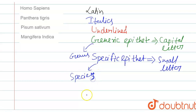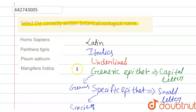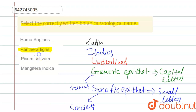Both the generic epithet (genus) and specific epithet (species) should be present in the scientific name. The correct option is Panthera tigris, because the first word — the genus — starts with a capital P, and the second word, tigris, indicating the species, starts with a small t. This shows the correct scientific name characteristics.